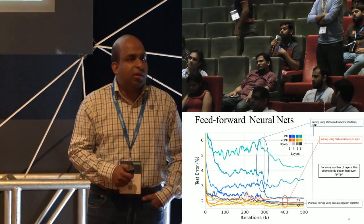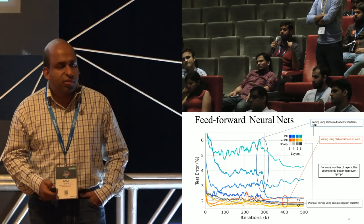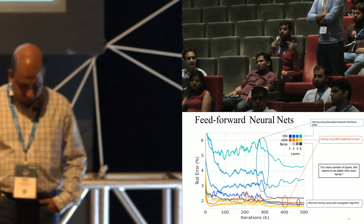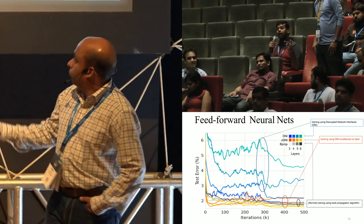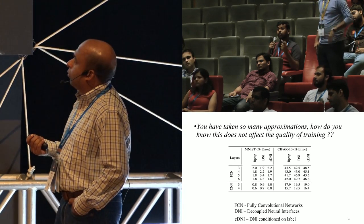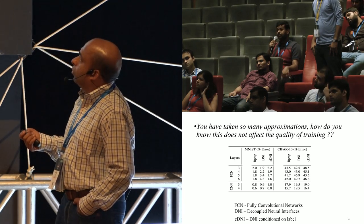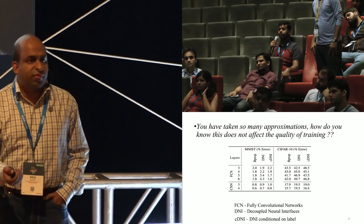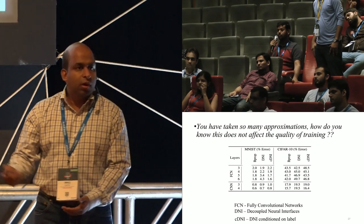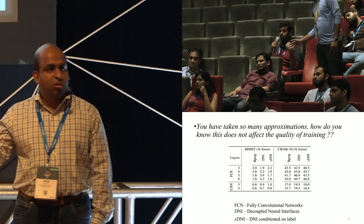On whether accuracy improves with more layers: going back to that slide — as layers increase, the actual error is coming down. DNI alone was bad, but by adding just one additional signal — the label of the data point, which is cheap and always available — you can actually come down and do better. There are no published papers yet on very high layer counts — only the two papers from the DeepMind team.